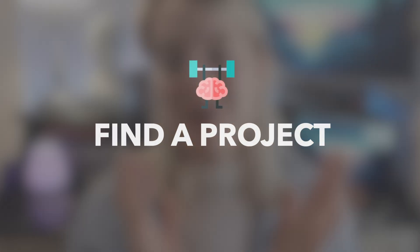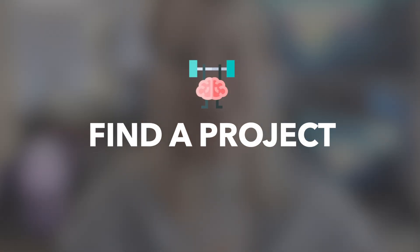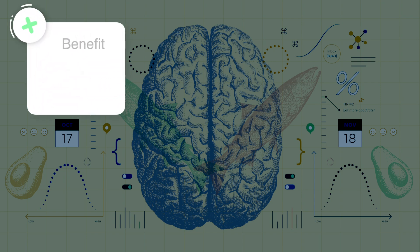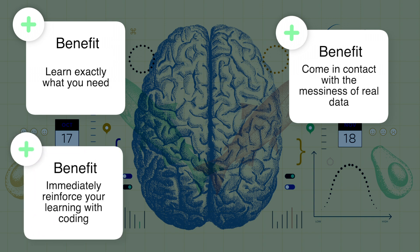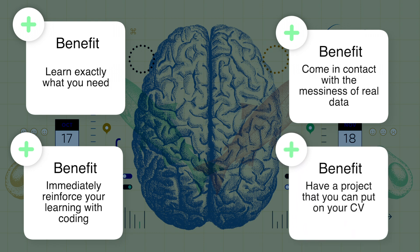After you've picked a topic and have your programming skills, it's onto step three: finding a project to really apply your newly found programming skills and discover the topic that interested you. In general there are a lot of benefits to project-based learning. The four I consider super beneficial are: you will learn exactly what you need, you will come in contact with the messiness of real data, you can immediately reinforce your learning with coding, and you will have a project at the end to put in your CV or GitHub.